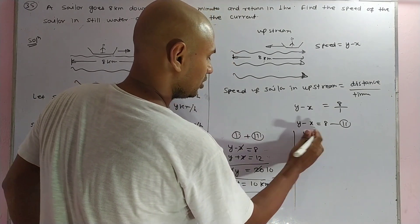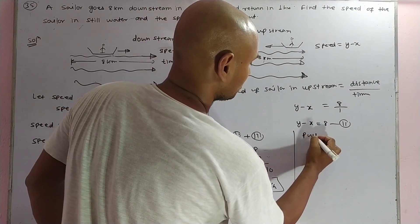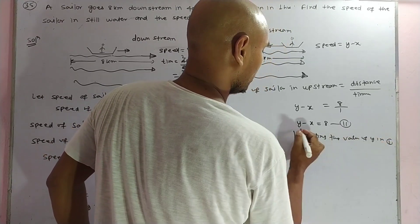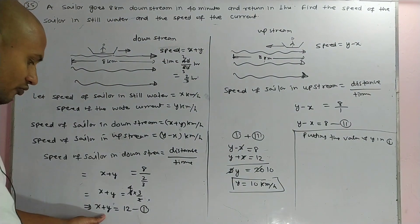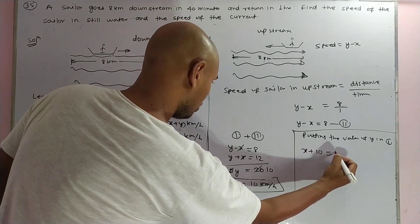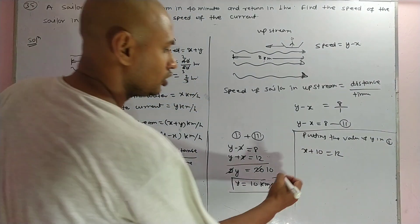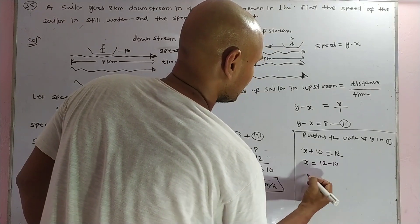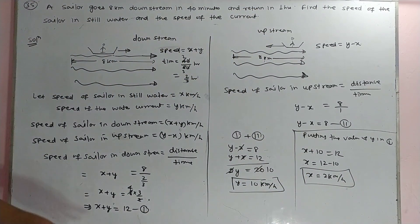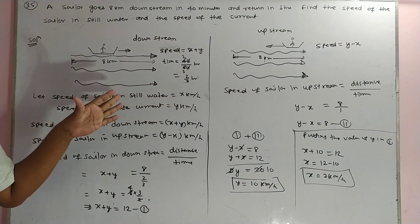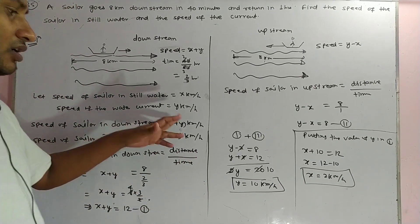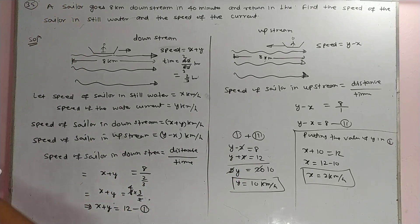Putting the value of y into equation 1: x plus y equals 12, so x plus 10 equals 12, giving x equals 12 minus 10, that is x equals 2 kilometers per hour. So the speed of the sailor in still water is 2 km/h and the speed of the water current is 10 km/h. This is the solution of the question.